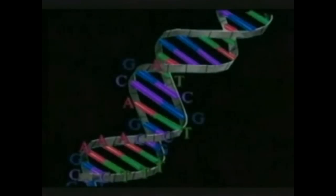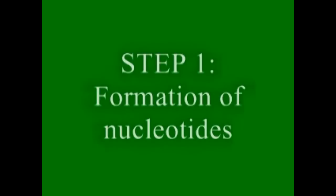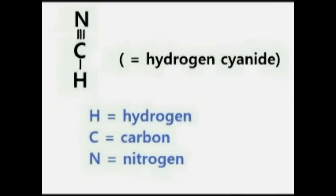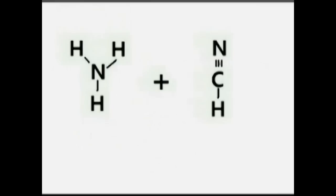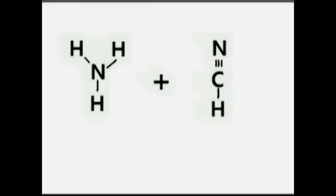DNA is a long chain molecule made from just four different types of nucleotide. So the first question is: where did the nucleotides come from? In 1961, a researcher called Juan Oro left hydrogen cyanide and ammonia to stew in an aqueous solution in his laboratory under conditions very similar to those that prevailed on the primordial earth. Left alone, the solution produced adenine — one of the four nucleotide bases that make up DNA.